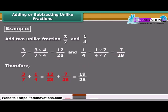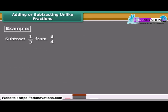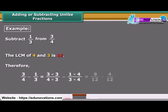Note that 28 is the least common multiple, LCM, of 7 and 4. In another example, to find the subtraction of unlike fractions, we need to find equivalent fractions of 3 upon 4 and 1 upon 3 which have the same denominator given by the LCM of 4 and 3. The required LCM is 12. Therefore, the subtraction of 3 upon 4 and 1 upon 3 is 5 upon 12.